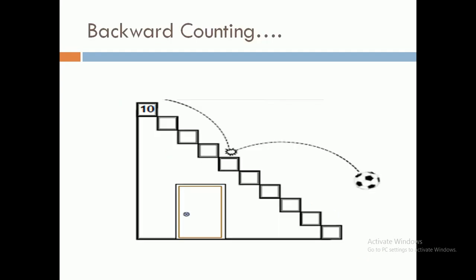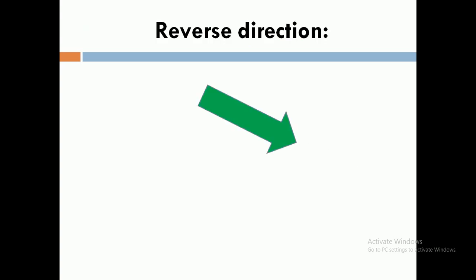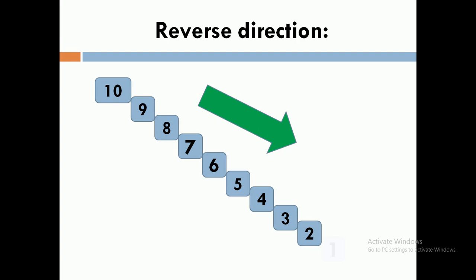In backward counting, we always go in the reverse direction. Let's see. I have started from number 10 and I will count backward, or I can say I will count in the reverse order: 10, 9, 8, 7, 6, 5, 4, 3, 2, and 1.